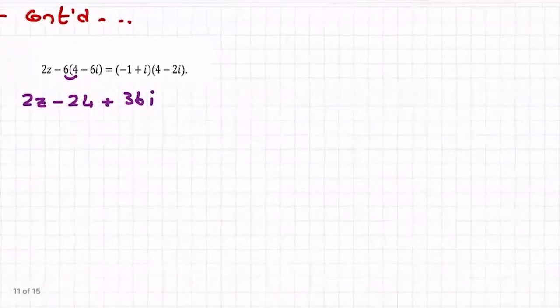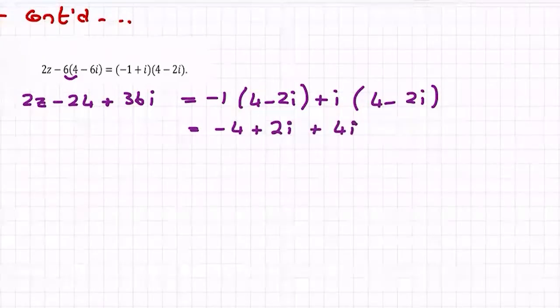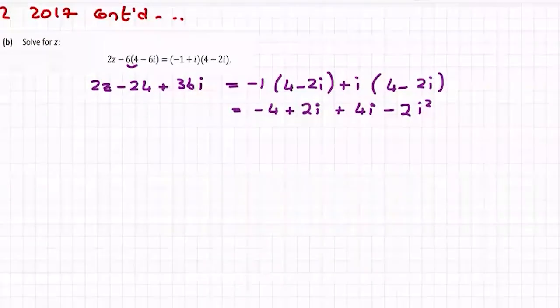That's on the left equals, so we have minus 1 by everything in the second bracket plus i by everything in the second bracket. Let's multiply out these: minus 1 by 4 is minus 4, minus by minus is a plus, two ones are 2i, plus i by 4 is plus 4i, plus by minus is a minus, two ones are 2, i by i is i squared.